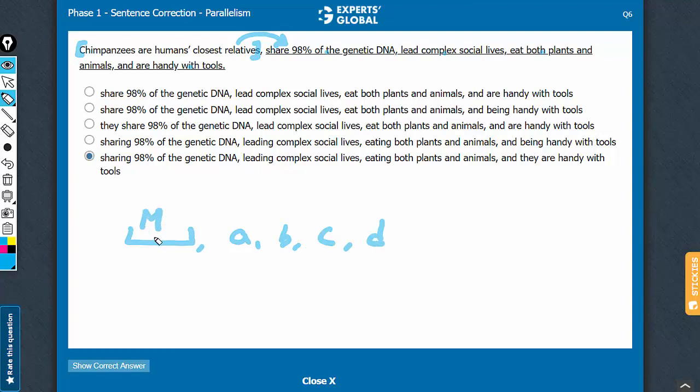Let's call this the main clause m. So, first thing, m should not be parallel to a, b, c, d, because m is not a part of the list. m is the main message. a, b, c, d are the subordinates.